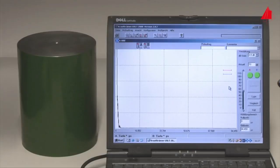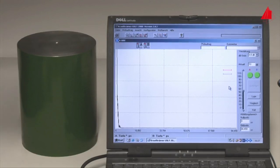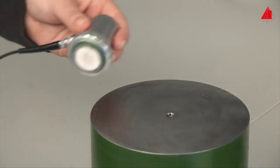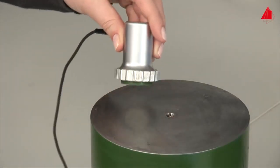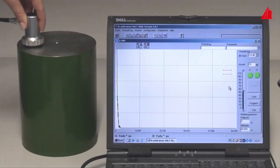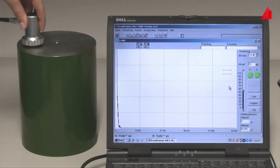A computer operates the probe via a plug-in card and power electronics. On the monitor, the intensity is plotted upwards and the time is plotted to the right. After placing the probe on top of the cylinder, initially no echo at all may be seen on the monitor. The reason for this is the too small contact area between the probe and the workpiece.